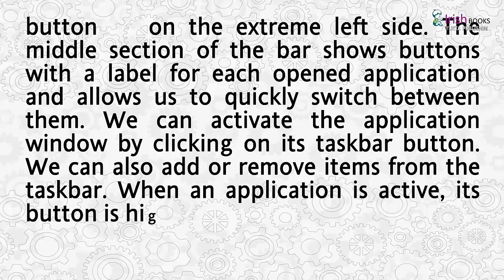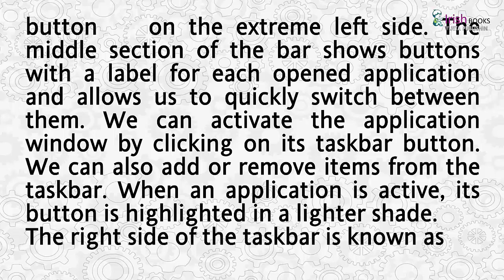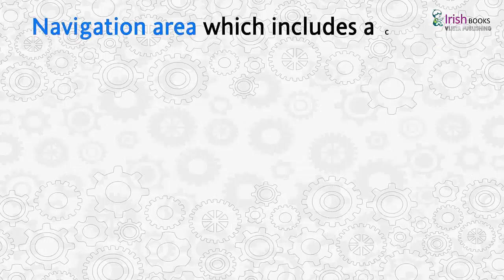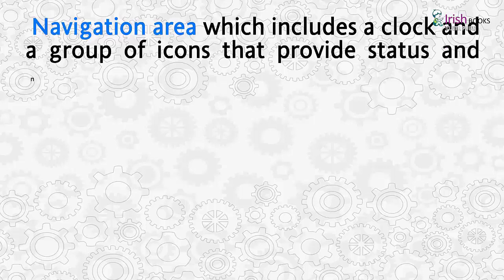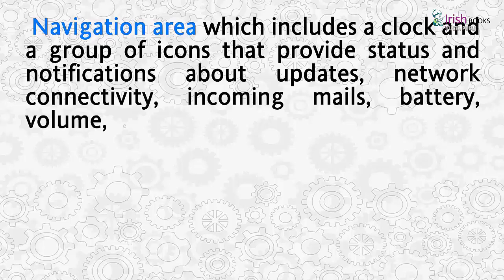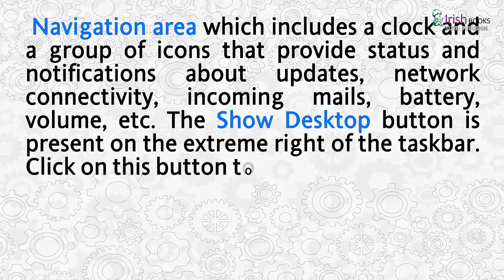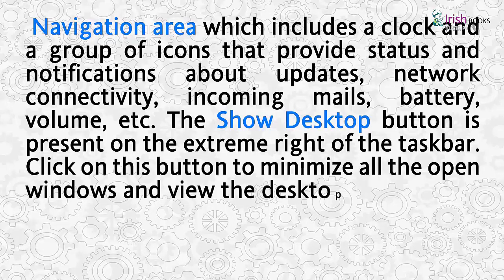When an application is active, its button is highlighted in a lighter shade. The right side of the taskbar is known as the navigation area, which includes a clock and a group of icons that provide status and notifications about updates, network connectivity, incoming mails, battery, volume, etc. The Show Desktop button is present on the extreme right of the taskbar — click it to minimize all open windows and view the desktop.